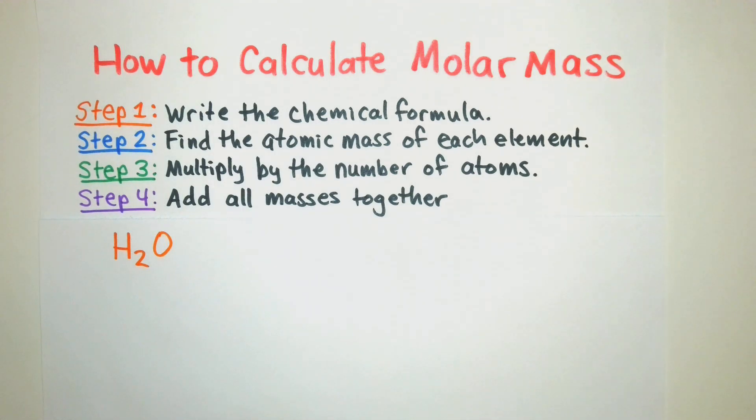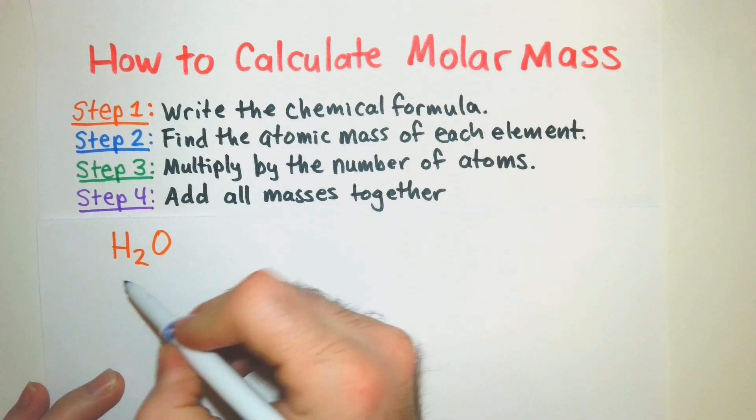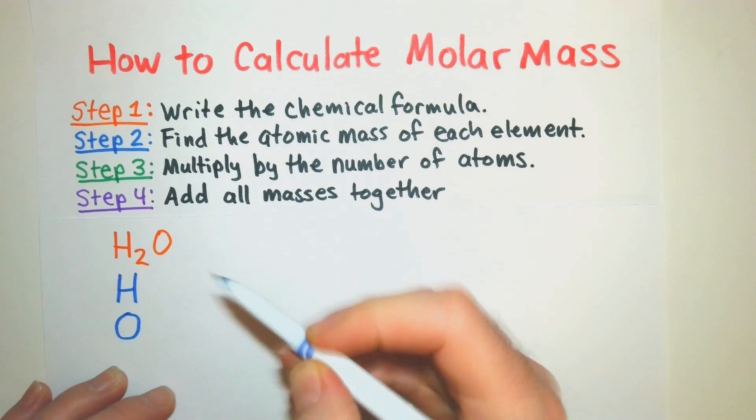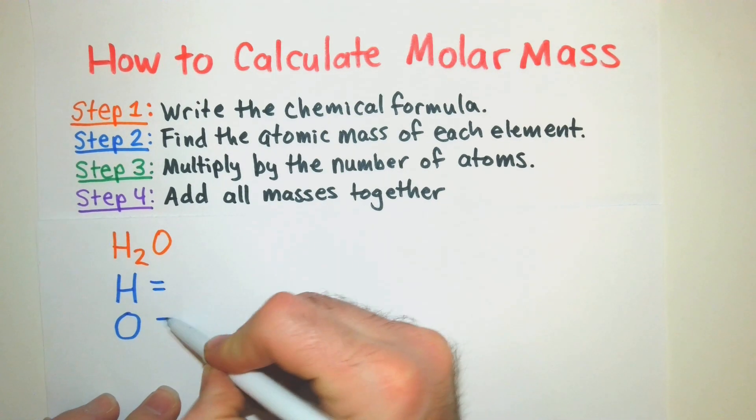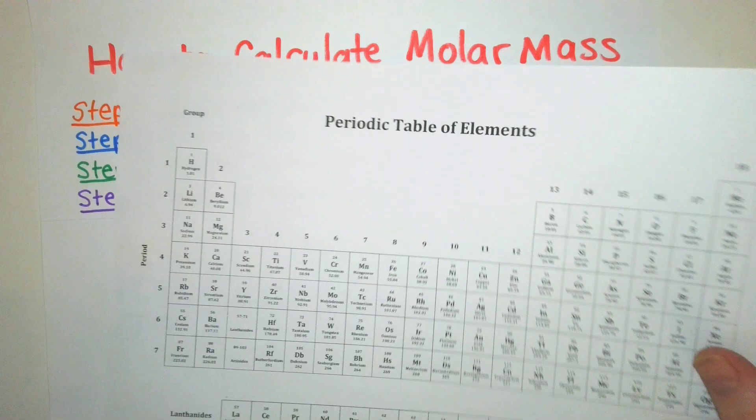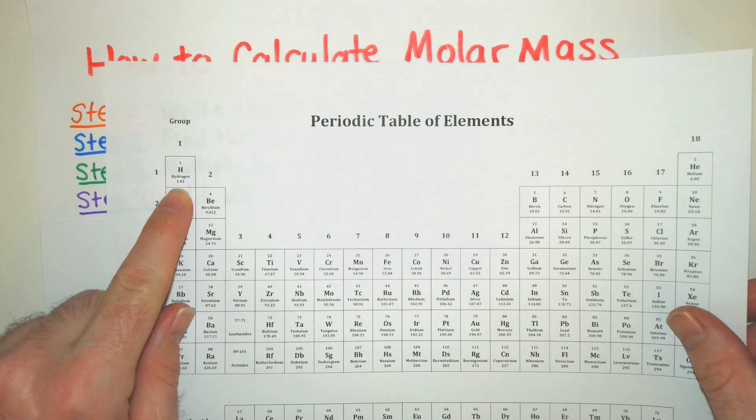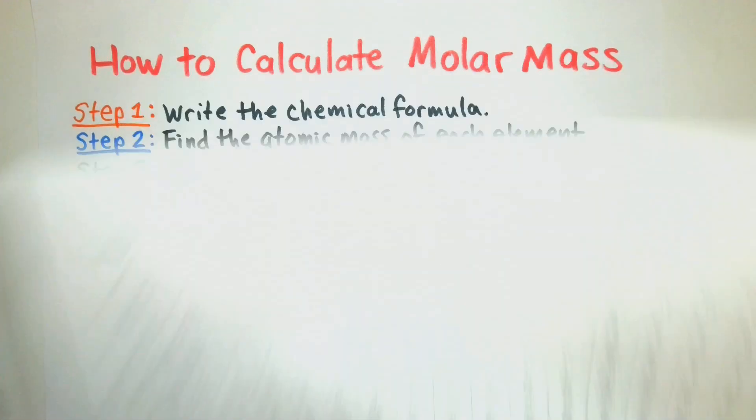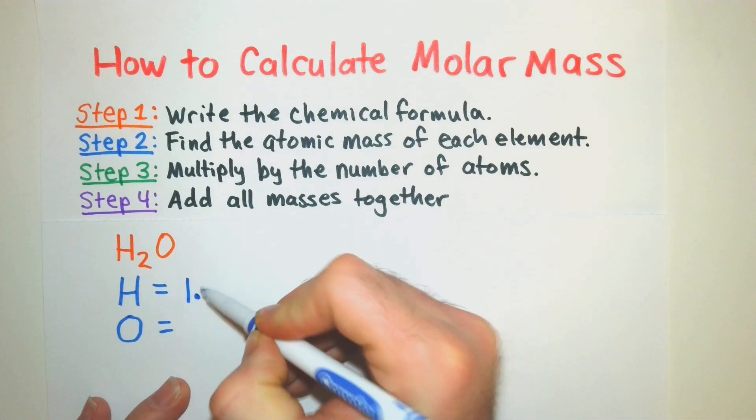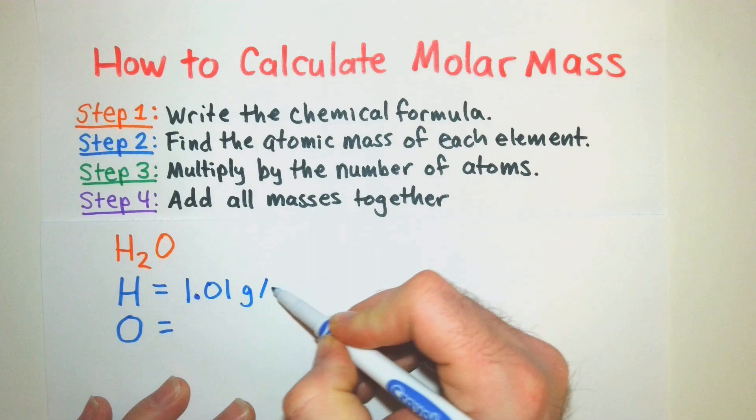Step two, we're going to find the atomic masses of each element. Well here, we have two elements. We have hydrogen and we have oxygen. So we've got to figure out what those atomic masses are. Alright, so hydrogen is right here. It is 1.01 grams per mole.